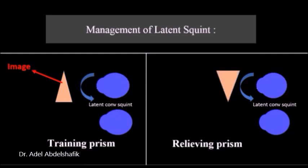Same situation, we can apply prism but base out. In this case the image will be shifted in the direction the eye wants to go. So this is relieving for the patient. What's against this method is that by time the muscles will be abnormal more and more and squint will change from latent into manifest squint.